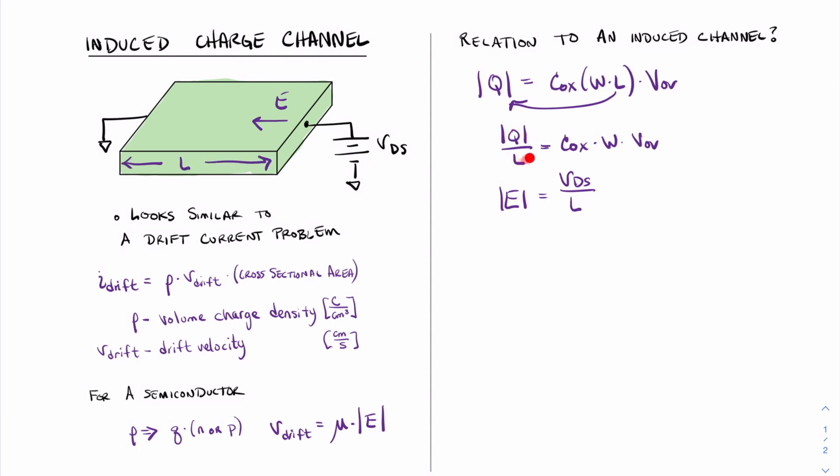Now we can combine the two ideas of charge and electric field and look at our drift current equation and this relationship of drift velocity. And we can come up with a final equation for the current through this device.